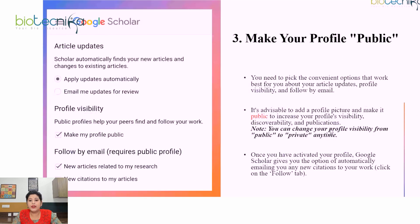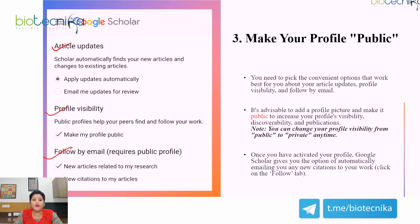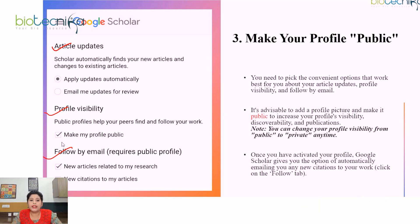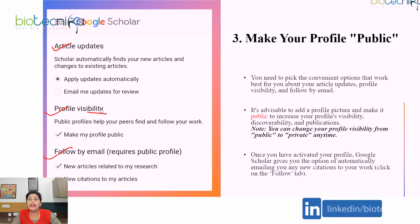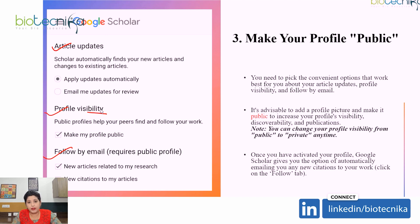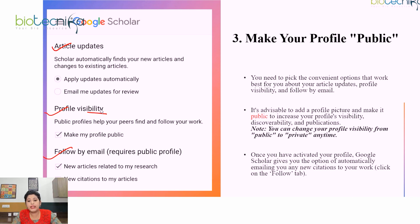After adding your publications, Google Scholar gives you options for article updates and profile visibility. For article updates, you can choose to have them applied automatically or receive email notifications for reviews. For profile visibility, you can choose public or private. If you make your profile public, it is advisable to add a profile picture to increase your discoverability. You can change visibility from public to private anytime. Once your profile is activated, Google Scholar can automatically email you about any new citations to your work by clicking the Follow tab.